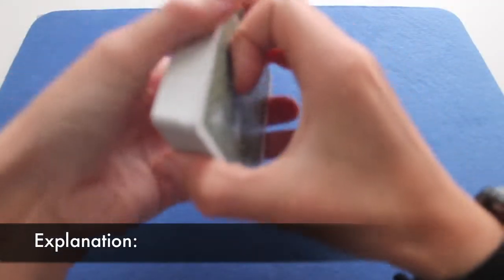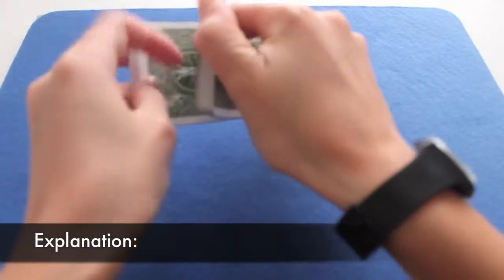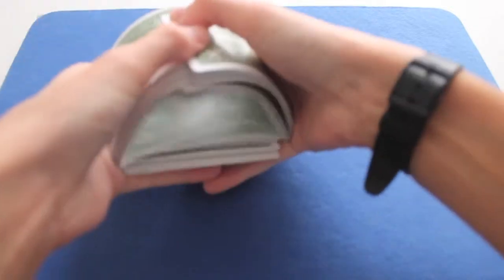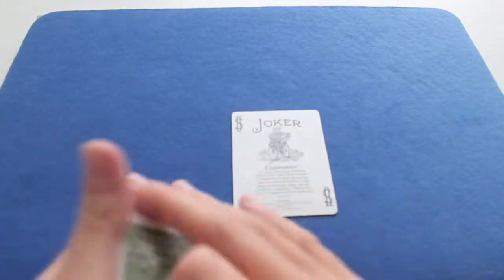So how does it work? It's actually very simple. First, the spectators shuffle the card. Like this. Then they pick one. So, the joker.